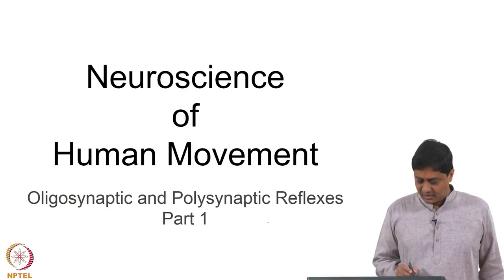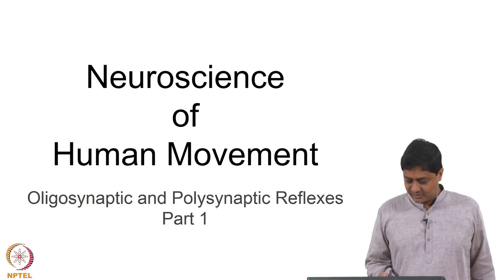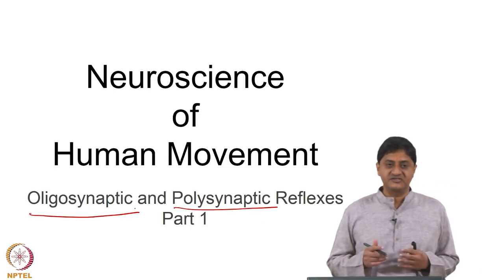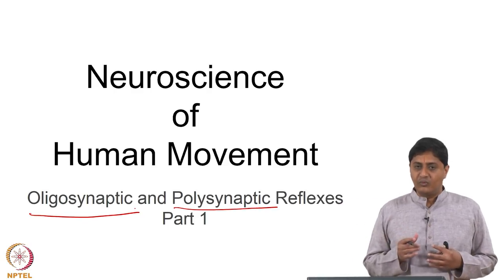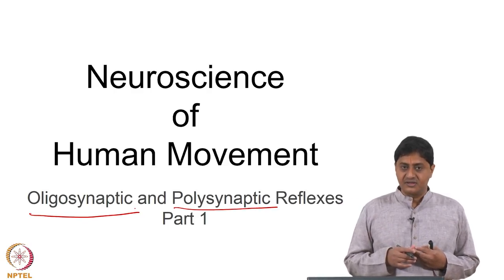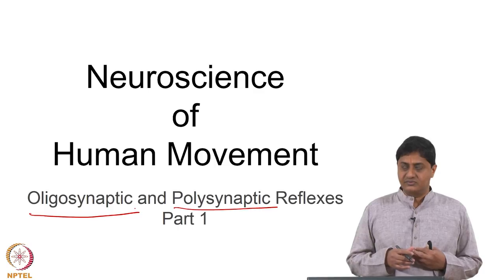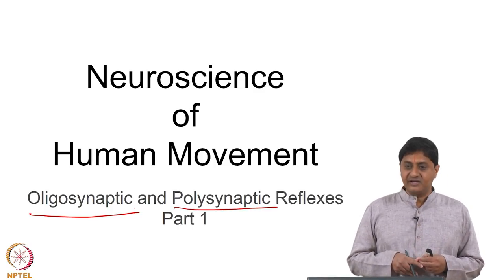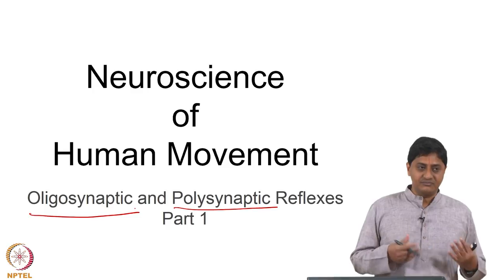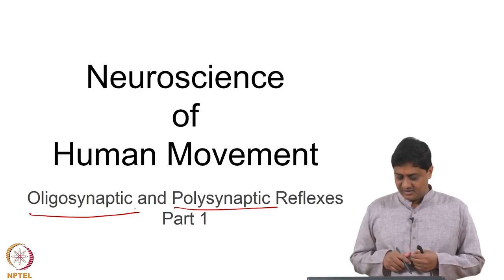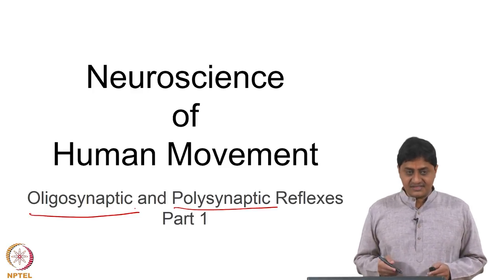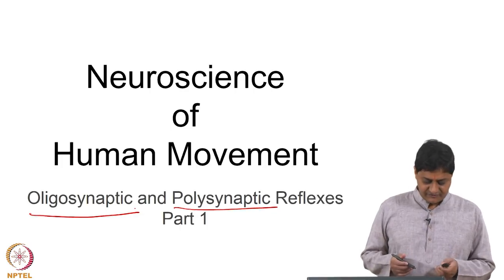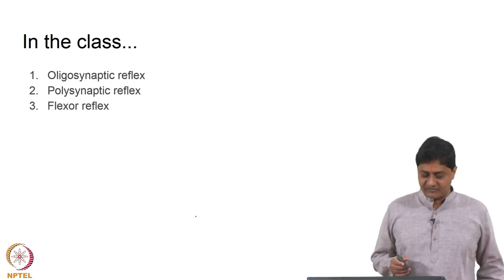Welcome to this class on oligosynaptic and polysynaptic reflexes. What is an oligosynaptic reflex? It is a reflex that involves more than one synapse — it could be 2 or 3. Polysynaptic involves many, more than 3. How are those different from monosynaptic reflexes?